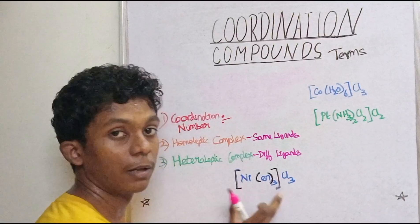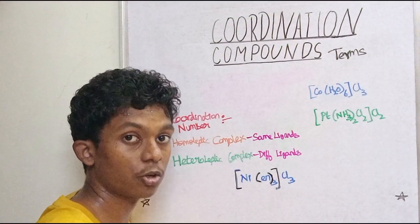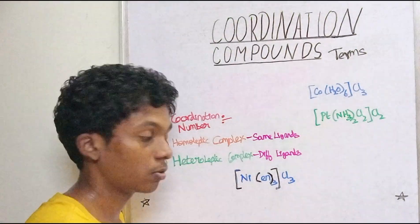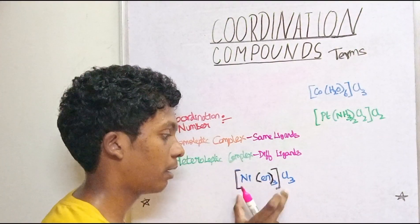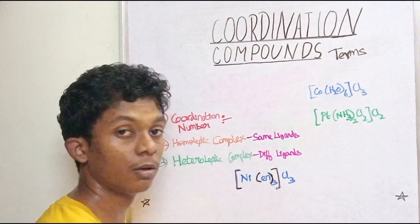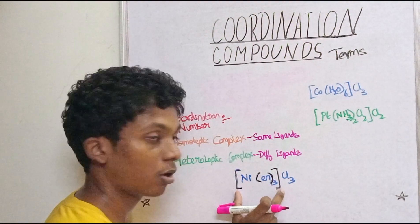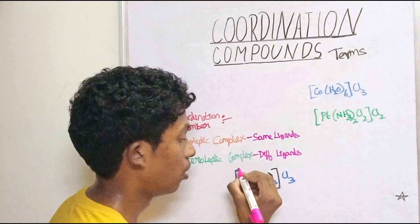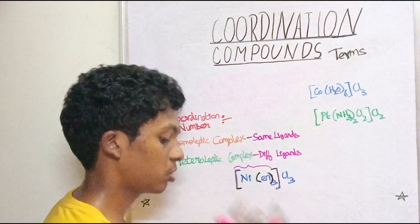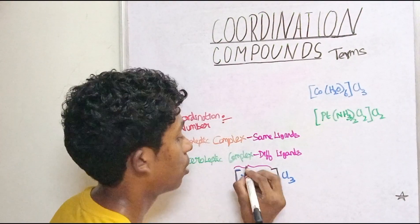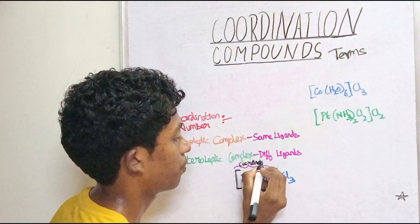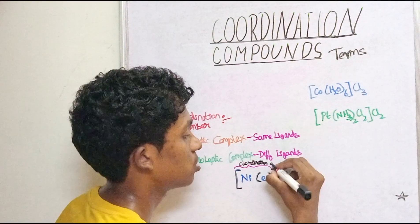In this square bracket, this is the coordination compound or complex. The square bracket is the main identity. Inside it is the coordination sphere. So this is the coordination sphere.